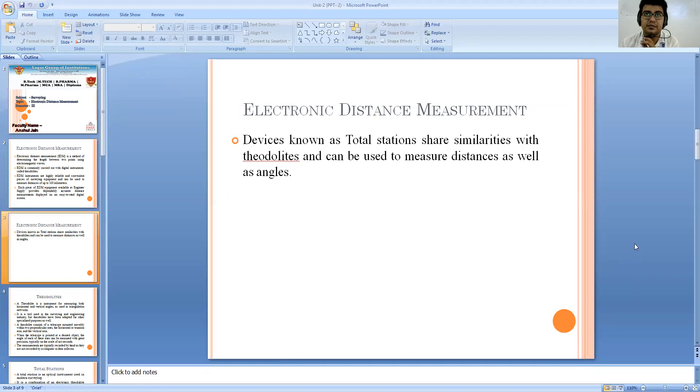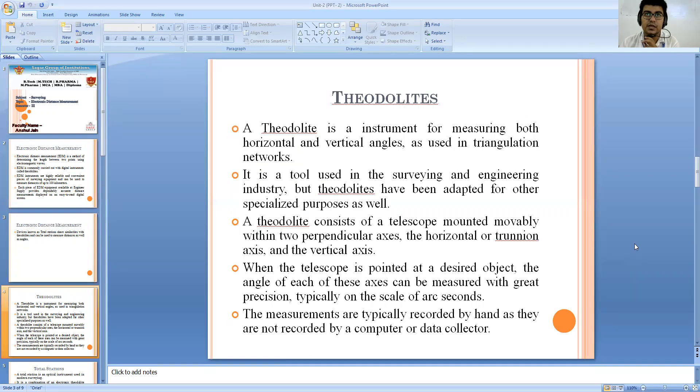Now the device which is basically used nowadays is the total station which has all the similarities like theodolites and can measure the distance, horizontal or vertical angles very easily without help of any other device.